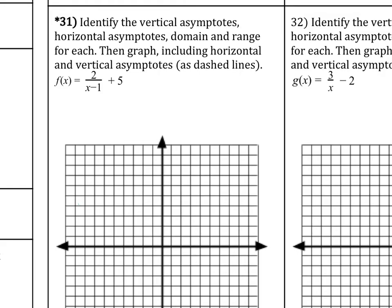So this last example, we're going to graph a rational function. So we need to identify the vertical and horizontal asymptotes, domain and range, then graph including horizontal and vertical asymptotes as dashed lines.